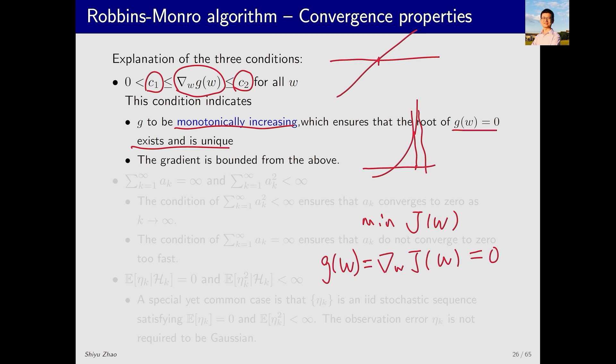The optimization problem can be transformed into solving the equation g(w) equals zero, where g(w) is the gradient. When we require that the gradient of g(w) be greater than C_1, we actually require the second derivative of the objective function, or the Hessian matrix, to be positive definite.